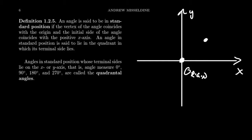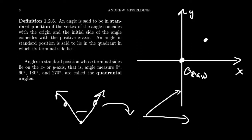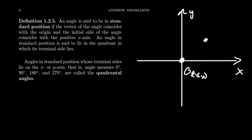We can also talk about the standard position of an angle. Angles are determined by any three points in the plane — we just connect them with rays. But since the measure of the angle doesn't change if we rotate the whole angle, the exact location of the points doesn't matter if we're just interested in the angle. We can put an angle in so-called standard position if its initial side coincides with the positive X axis. The terminal side terminates wherever it wants, and any point (x, y) on the terminal side determines a unique angle in standard position.